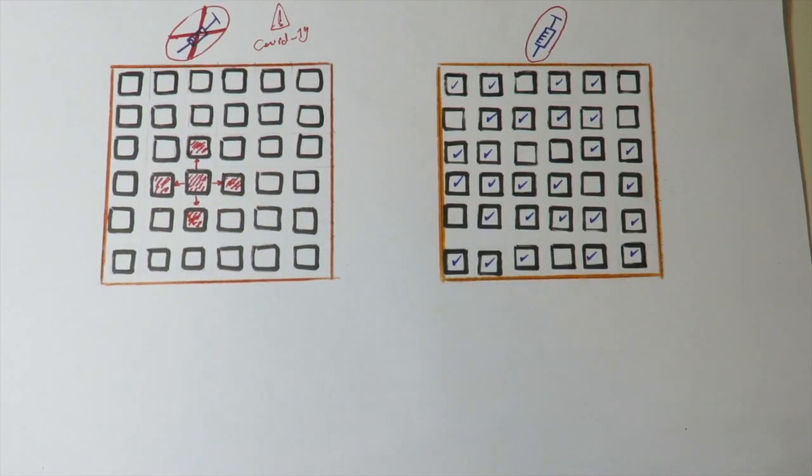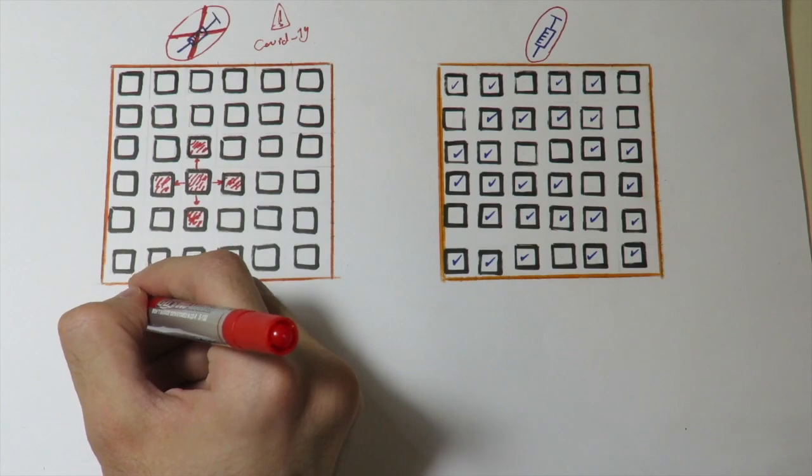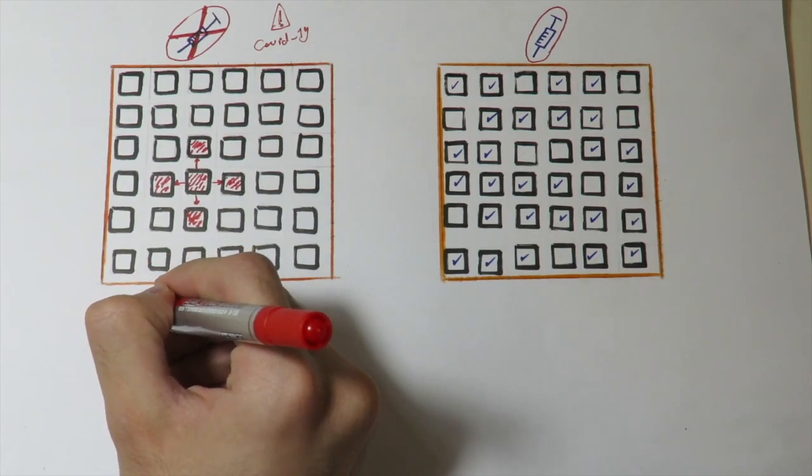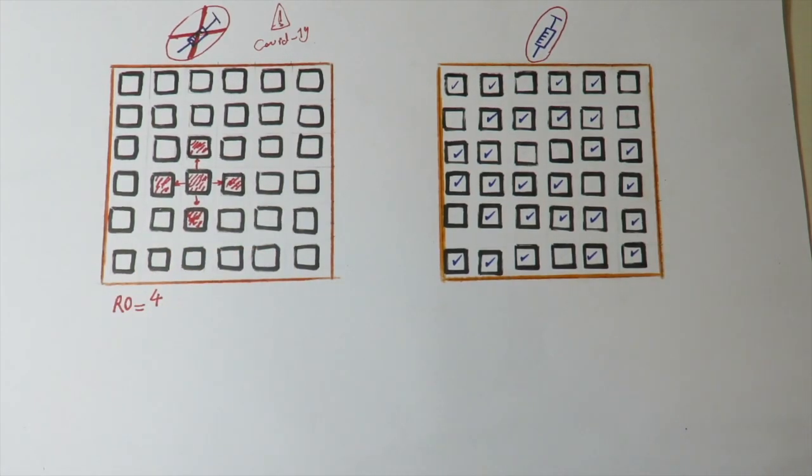Here, in this condition, we say that R0 is four. R0 actually stands for Basic Reproduction Rate, which means the number of people who may be infected when an index case enters a population like this.